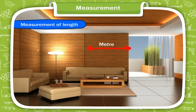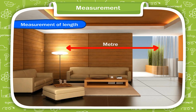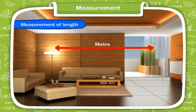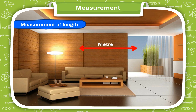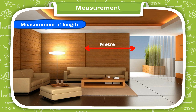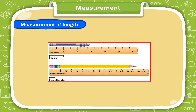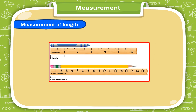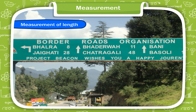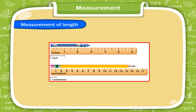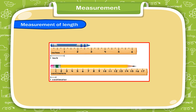Measurement of length. The standard unit of length is metre. We use it when we have to measure how long something is. We measure smaller lengths in centimetres and longer lengths in kilometres. We use rulers, scales, and measuring tapes to measure lengths.